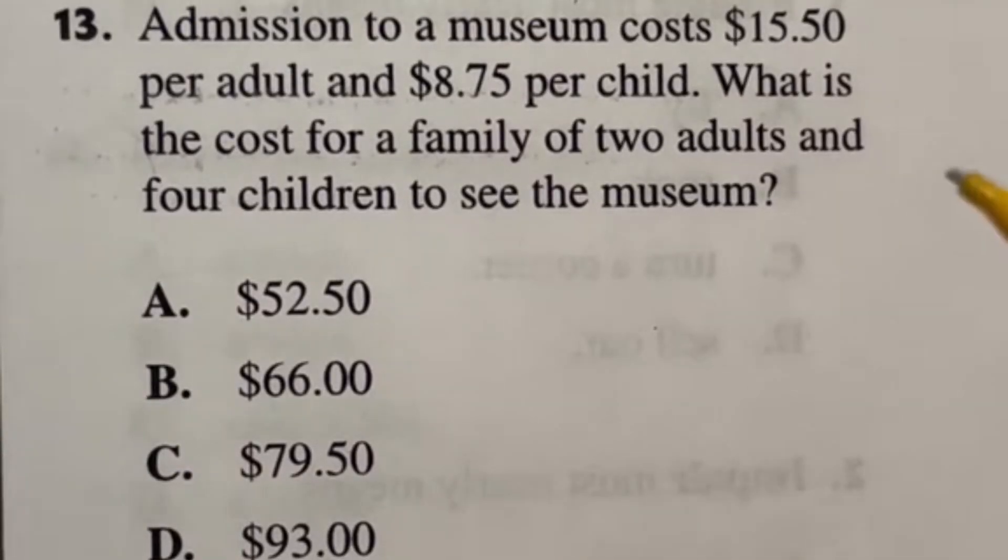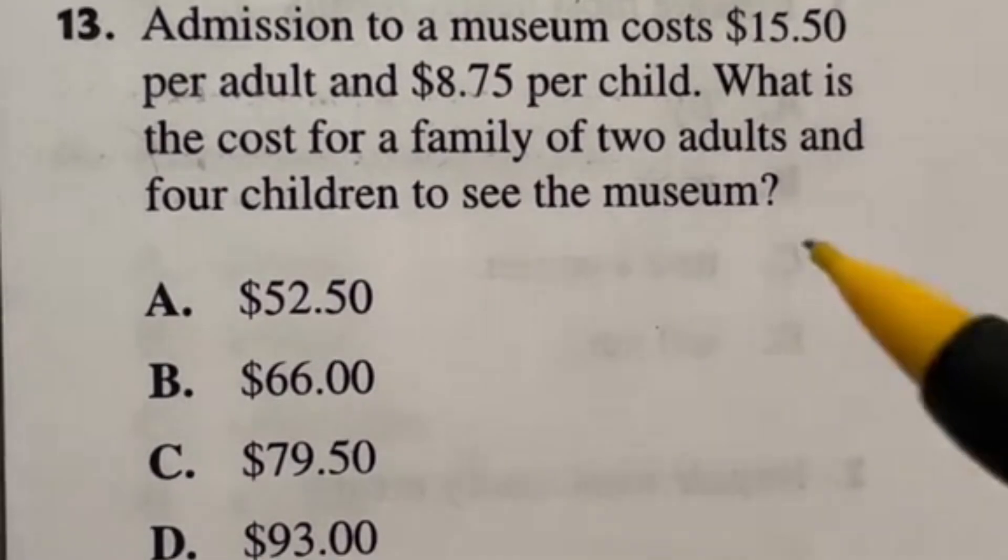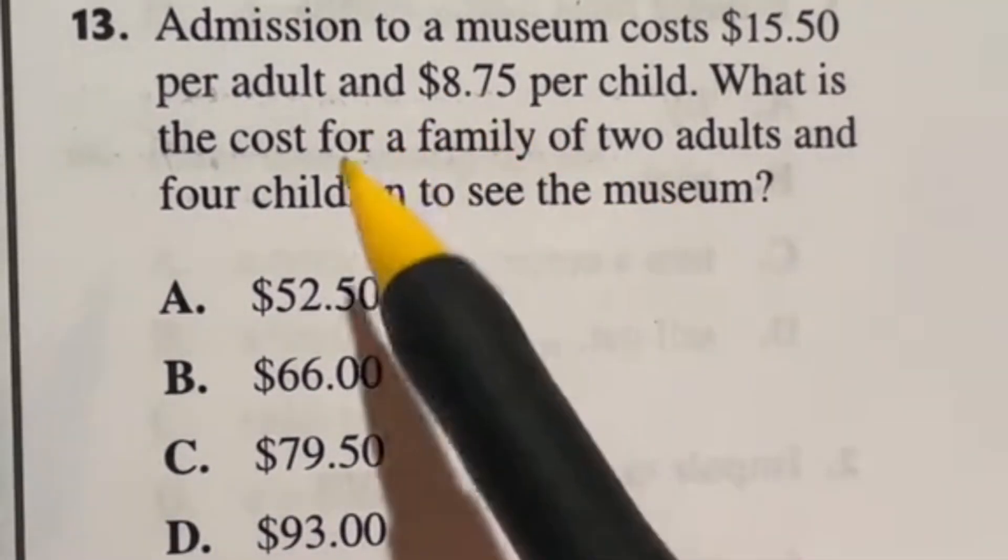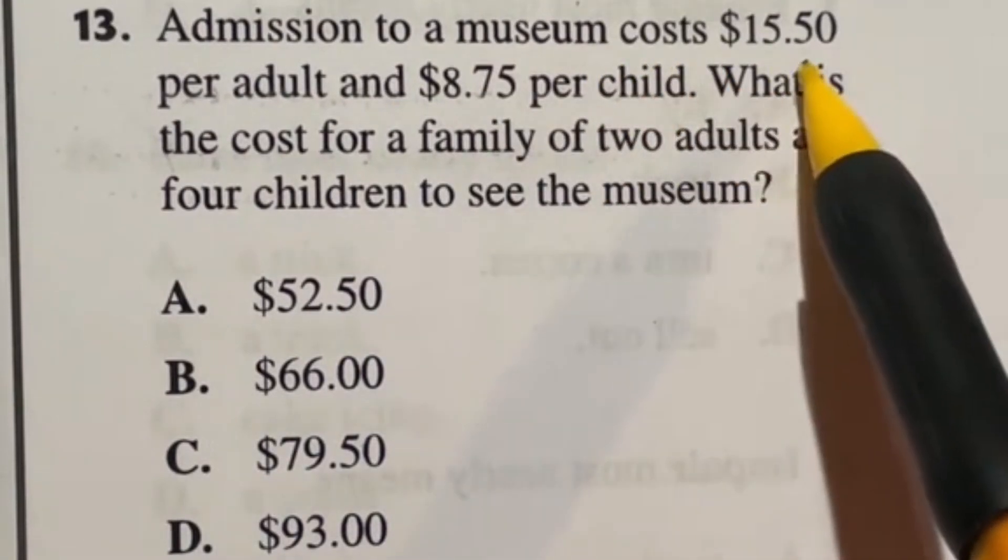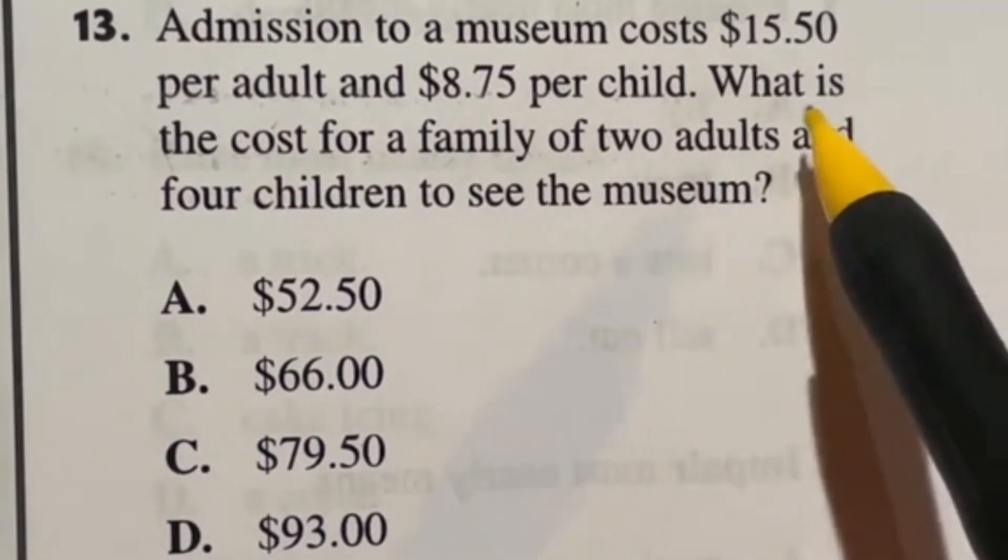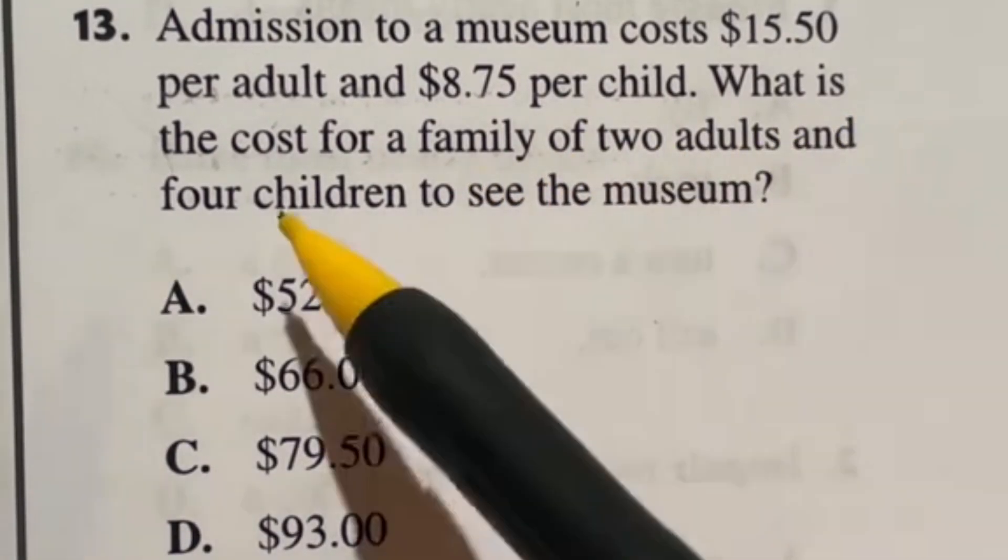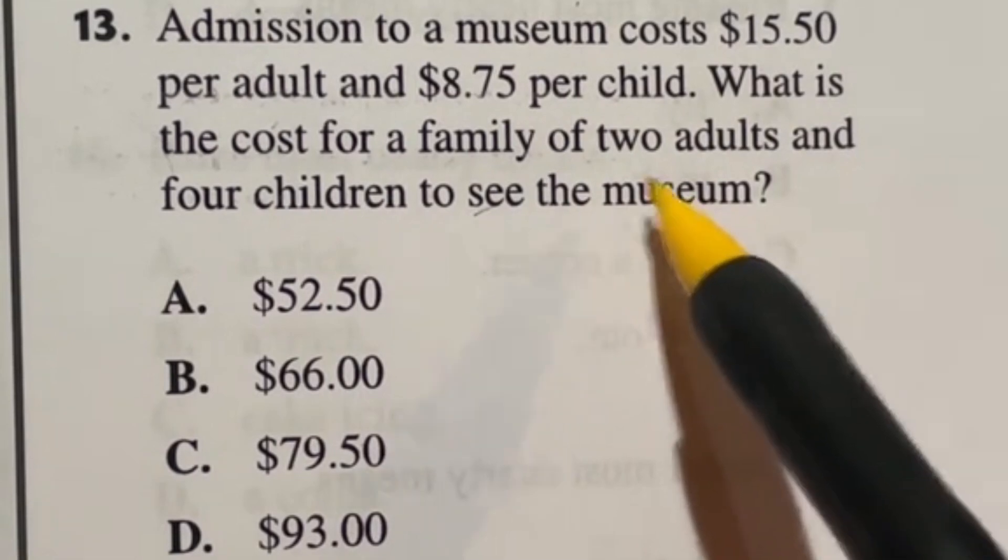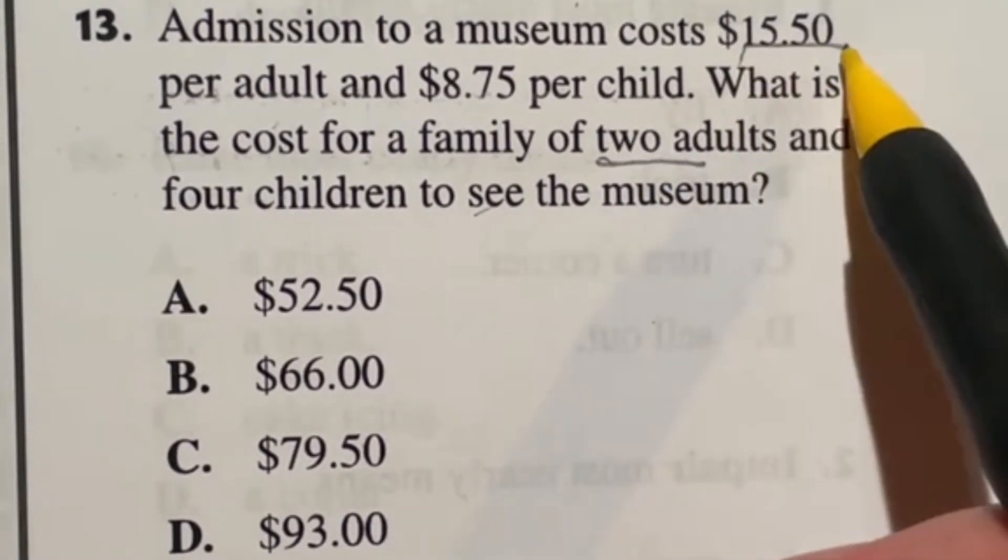Number 13 is going to be fairly easy but part of it comes down to doing this without a calculator. It says admission to a museum costs $15.50 per adult and $8.75 per child. What is the cost for a family of two adults and four children to see the museum? Now the two adults I feel like is going to be fairly easy.